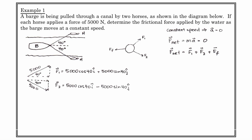Force 2 has the same direction in x but is in the downward direction in j, which is a little different from force 1. Because it has the same magnitude and angle, we write F2 as 5,000 cos40 i-hat minus 5,000 sin40 j-hat. The minus sign is because this force is acting in the downward direction, and we've defined up as positive.